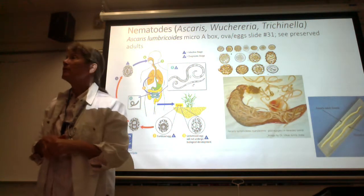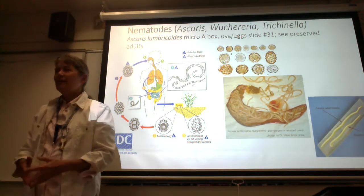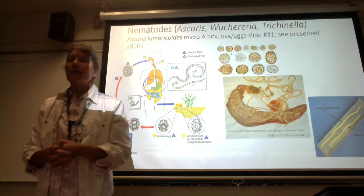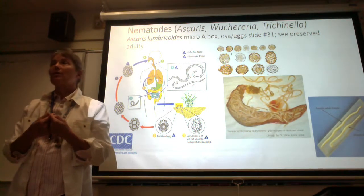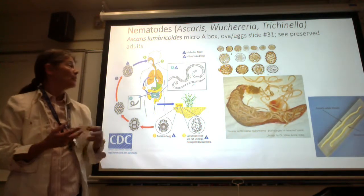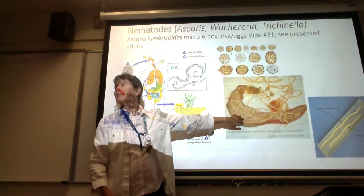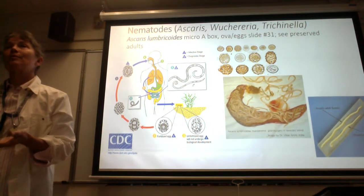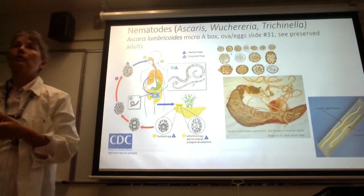If a person has just a few adults, you might not even know it. But what's really serious is if people don't have access to clean drinking water and food and there's a lot of contamination, they can get so many adults in the intestine. What could happen? They could block the intestine, which is truly life-threatening. This is why clean drinking water and clean food is so important worldwide.